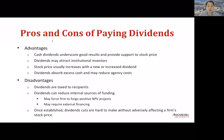For firms, there are some advantages of paying dividends. Cash dividends underscore good results and provide support to the stock price. Dividends may also attract institutional investors due to tax exclusion. The stock price usually increases with a new or increased dividend, called the signaling effect. Dividends may also absorb excess cash and may reduce agency costs.